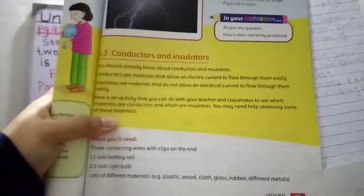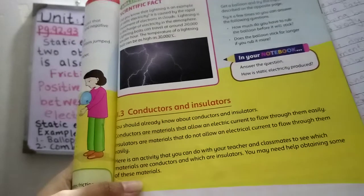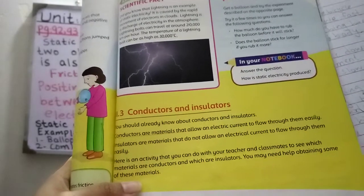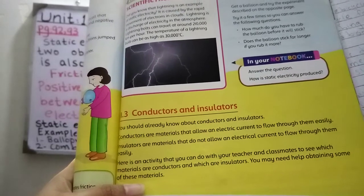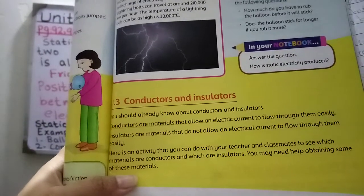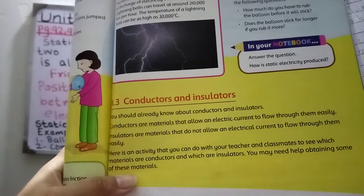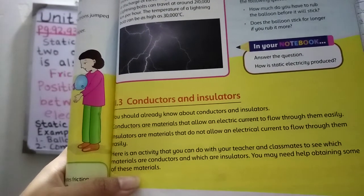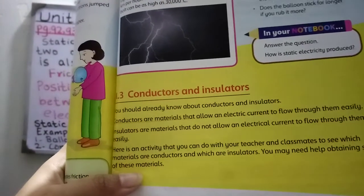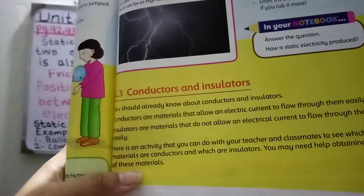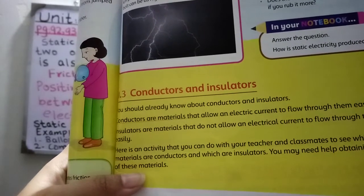The next topic is conductors and insulators, which may have been covered in previous classes. Conductors are materials that allow electric current to flow through them easily. Insulators are materials that do not allow electric current to flow through them. We can perform an activity in the classroom.